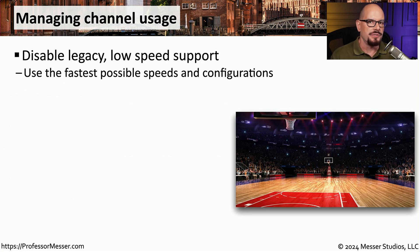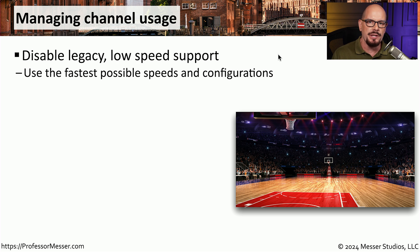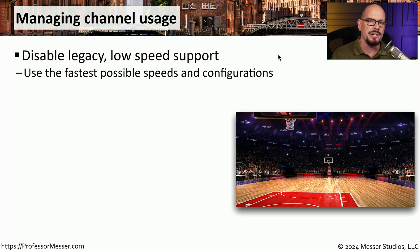There are some best practices for managing a wireless network and getting the best throughput possible. One of these is to disable any legacy or low-speed support. Your access point may have an option to allow older wireless technologies to work on the network, but enabling those configurations will often slow down or make the overall wireless network less efficient. The best throughput is available from the most recent standards, so if all your devices support the latest standard, you should disable that legacy option.